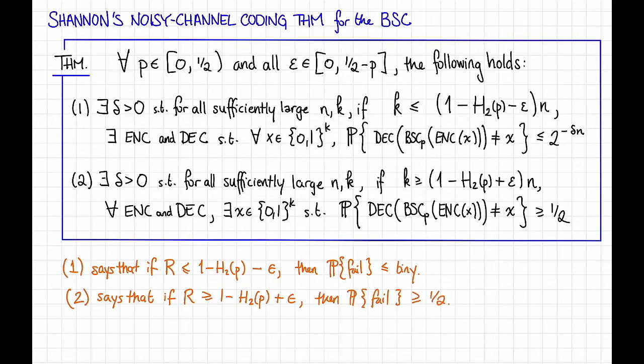So this is a formal statement of what we mean by the capacity of the binary symmetric channel is this number, 1 minus the binary entropy of P. For the remainder of this video, we're going to sketch the proof of this theorem.